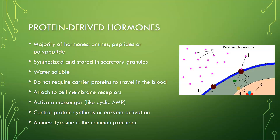The protein-derived hormones — the majority of your hormones — such as your amines, peptides, polypeptides, or glycoproteins, are synthesized and stored in secretory granules until they are released. They are all water-soluble, so they're going to be freely carried in the blood. They don't have to have a specific carrier protein to travel in the blood. They are attached to cell membrane receptors, so they'll float around the blood to get to the cell displaying a receptor for it, and then co-bind on that cell membrane. The binding on the cell membrane then activates messengers on the other side, like cyclic AMP, and that activation can control protein synthesis or enzyme activation of some sort.